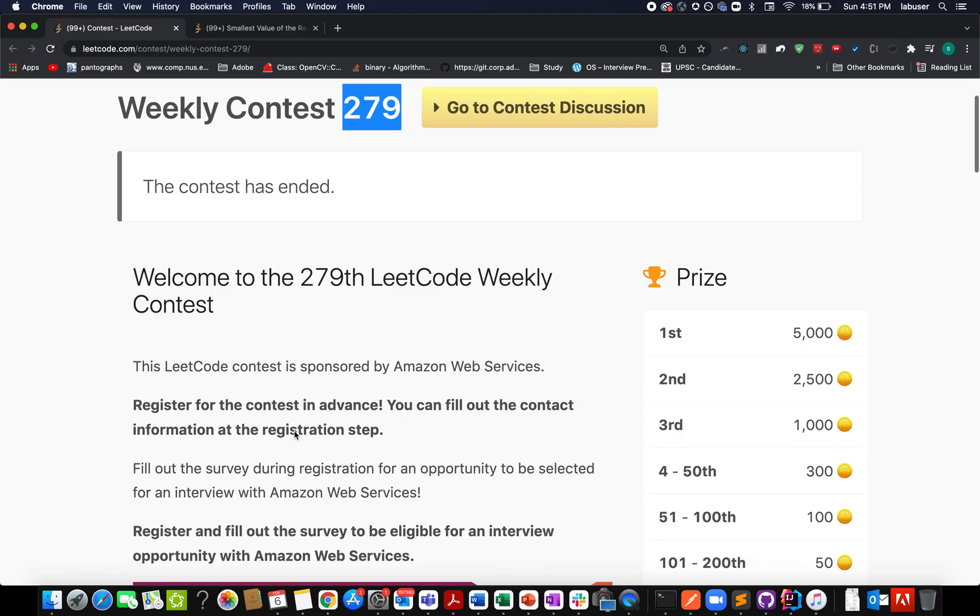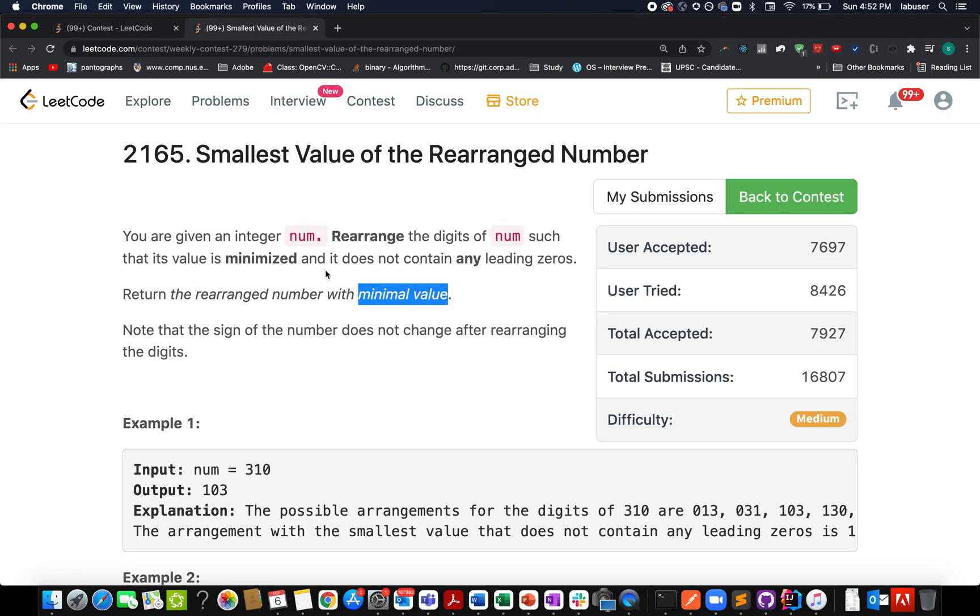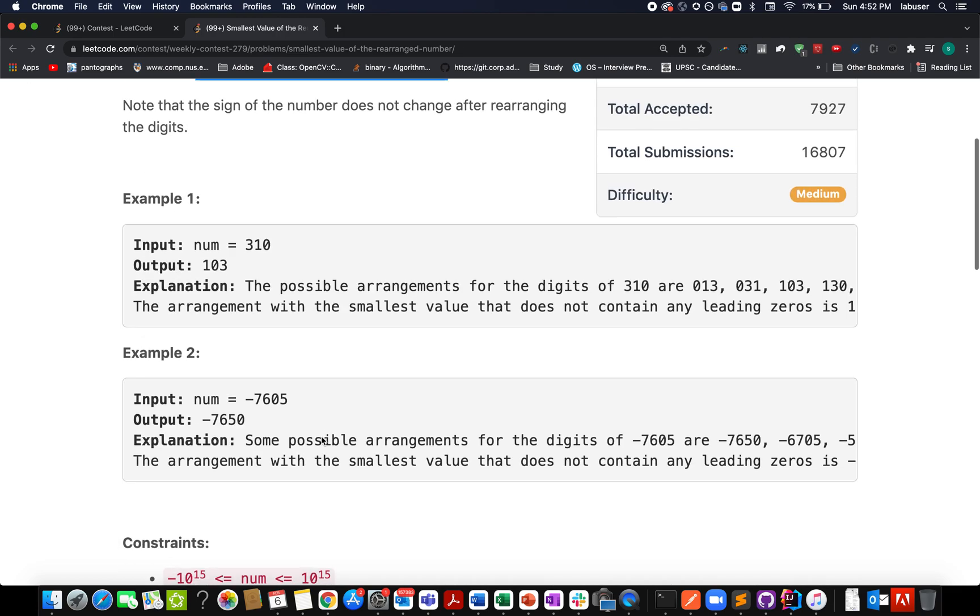Following the weekly contest 279 series, the second question is smallest value of the rearranged number. In this question we are given an integer value and we need to rearrange the digits of this input number such that the resultant value is minimum in nature. We need to return that rearranged number.